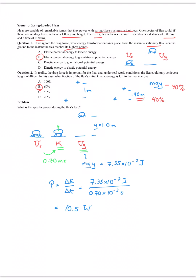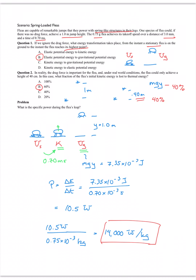The specific power is 10.5 watts divided by the flea's mass of 0.75×10⁻³ kilograms, giving 14,000 watts per kilogram. That is off the charts. The bush baby was the highest case we saw with muscles at about 180 watts per kilogram — this is clearly more. The only way to achieve this is to have energy stored in springs. The flea uses its muscles to load up a spring, then releases it — and during that takeoff there's an intense power output.